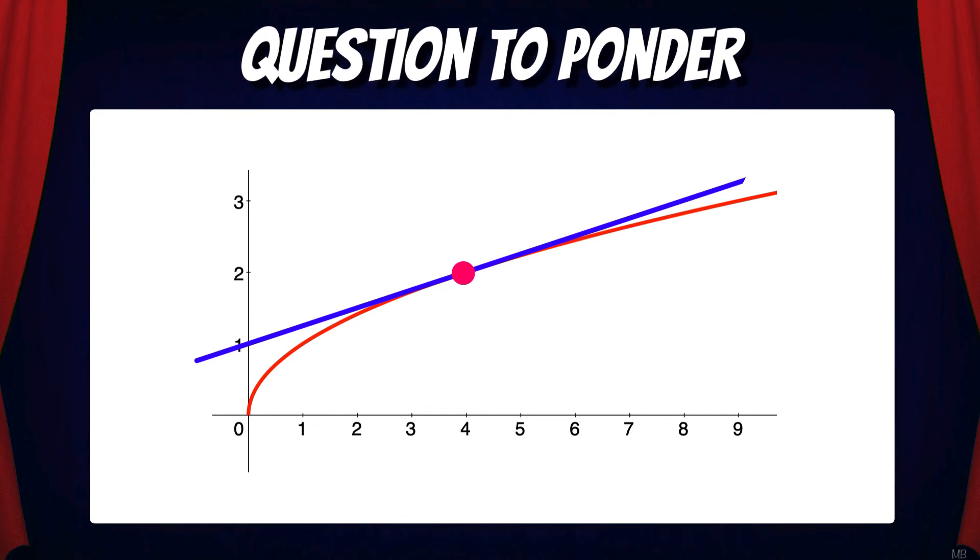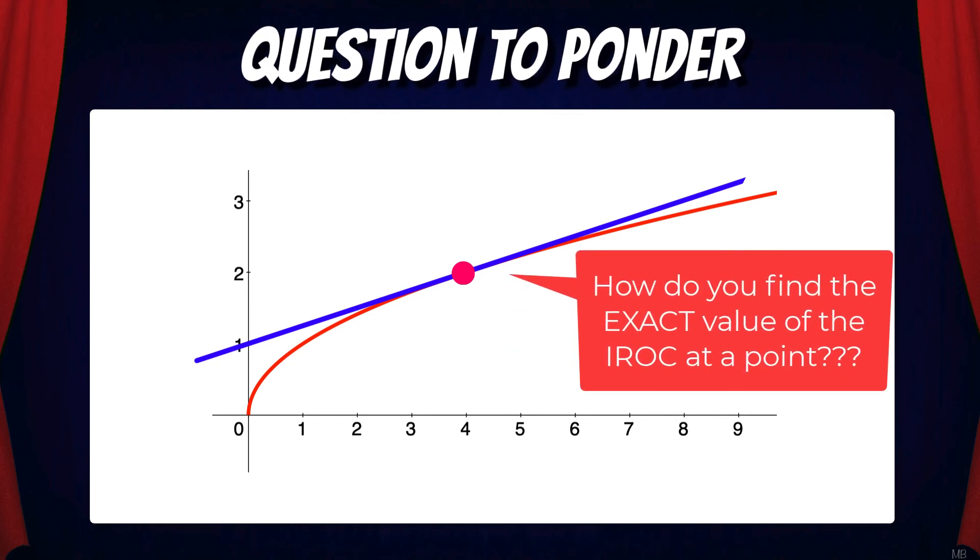But here's a question to ponder. In this video, we estimated the instantaneous rate of change using average rate of change. But how do you think you'd find the exact value of the instantaneous rate of change at a point? We'll be addressing that in a future video.